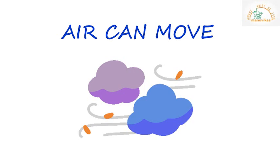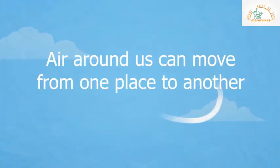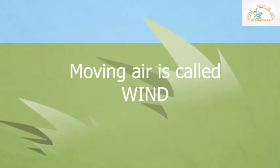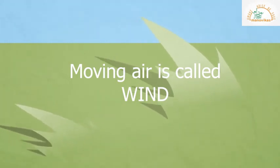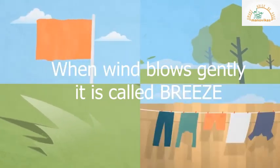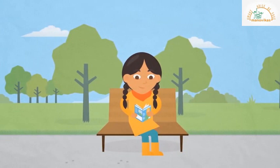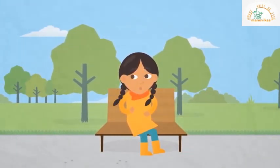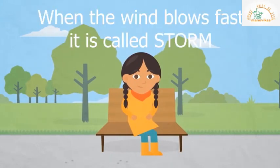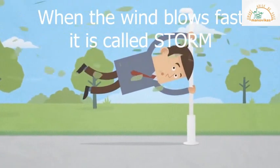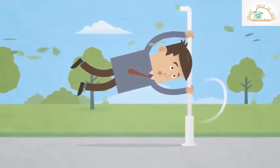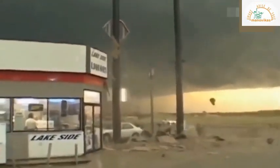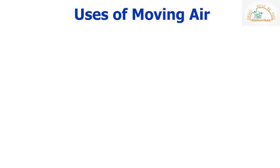Air can move — air around us can move from one place to another. Moving air is called wind. When wind blows gently it is called a breeze; we like to sit in the open when a cool breeze blows. When the wind is strong and blows very fast it is called a storm. A storm has a lot of force and can blow away things, damaging trees, houses, crops, and vehicles.